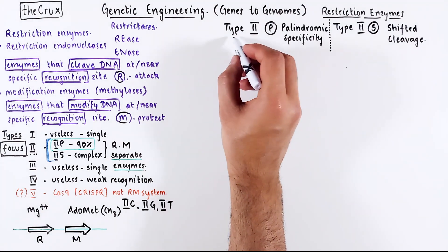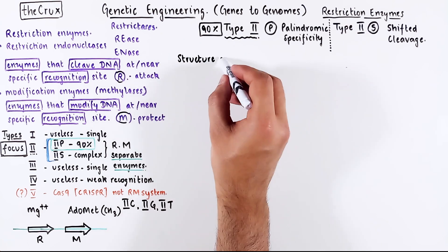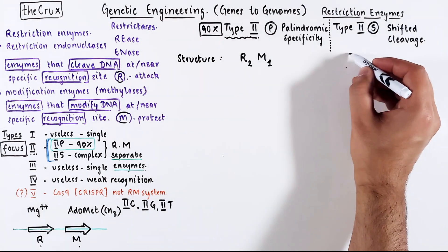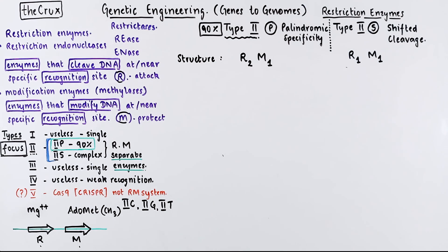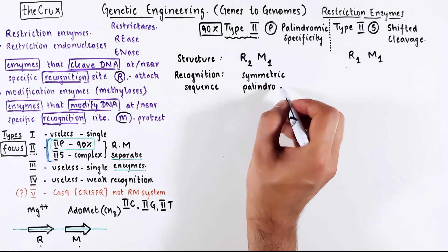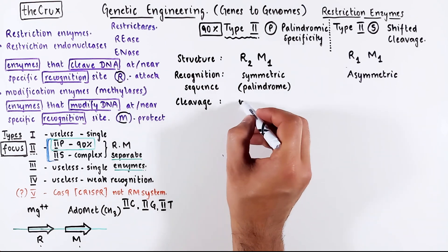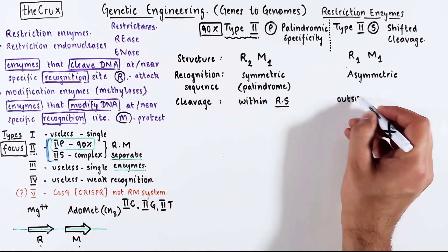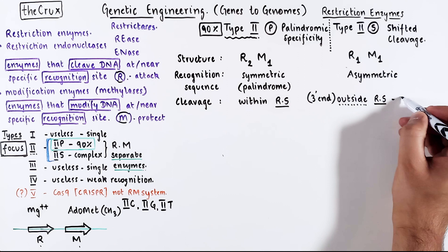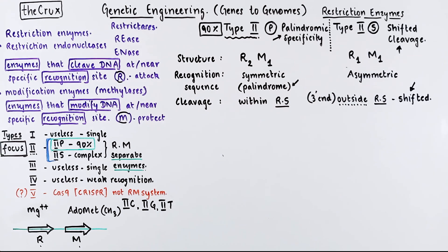Again, type 2 enzymes are like the 90% of all used restriction enzymes. Structurally, the R and M enzymes are separate. The R is a dimeric enzyme, the M is the monomeric part. In the case of 2S, these enzymes are monomeric. The recognition sequence for the 2P enzyme is always palindromic, whereas the 2S sequence is not palindromic, so it has asymmetry. 2P enzymes cleave within their recognition site, whereas 2S enzymes cleave outside of the recognition. The outside is typically on the 3' end of the recognition site, and that is the shifted cleavage. Now hopefully you can tell where the names of the categories come from.